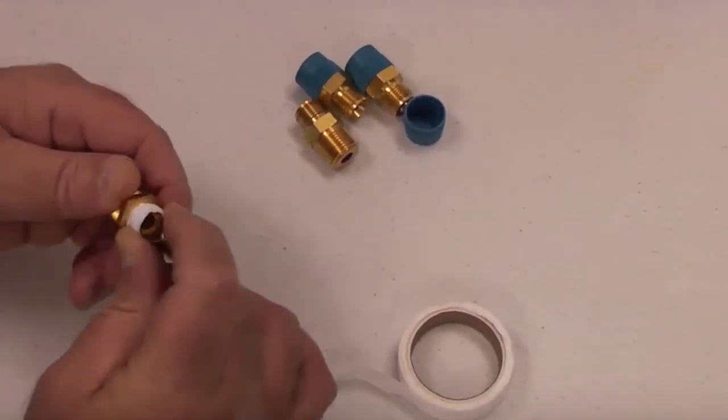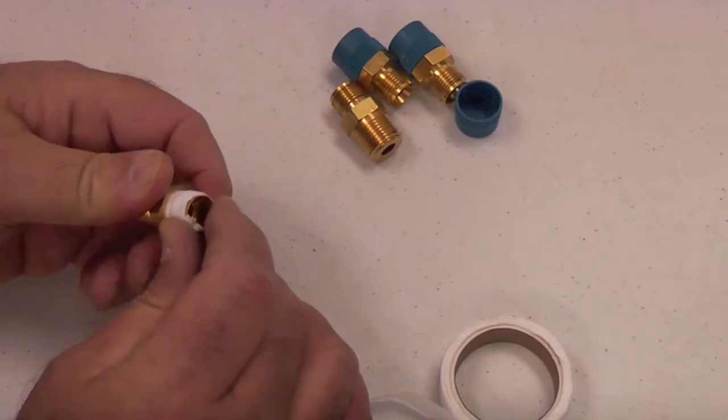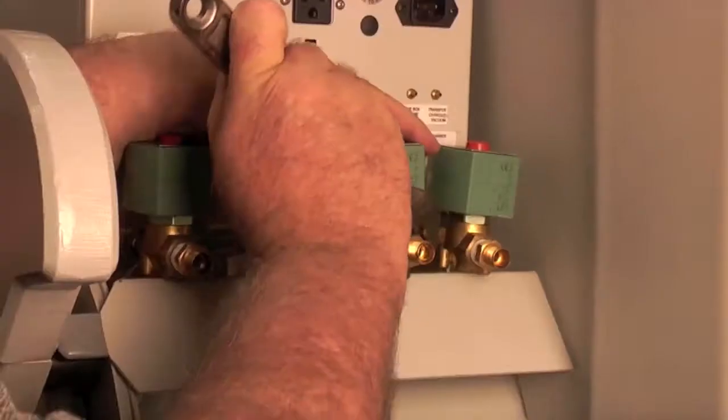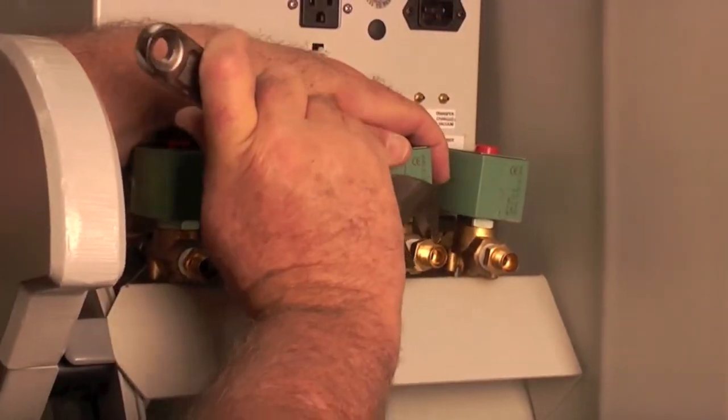First, wrap the male 3/8 inch NPT threads on each of the four fittings with Teflon tape. Then, screw them into the four glovebox solenoid valves. Use an adjustable crescent wrench for tightening.